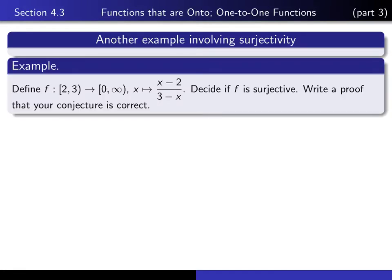Let's consider the function from this set to this set. It takes an x, which is bigger than or equal to 2 and strictly smaller than 3, into the set of numbers from 0 to infinity, and it maps such an x to x minus 2 over 3 minus x.